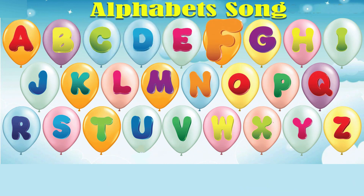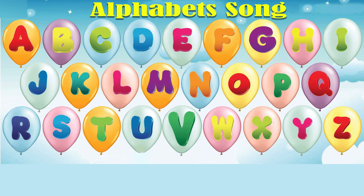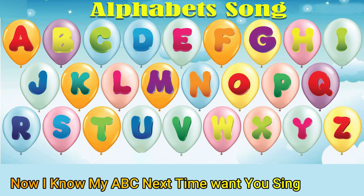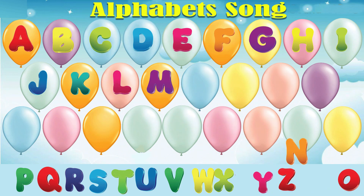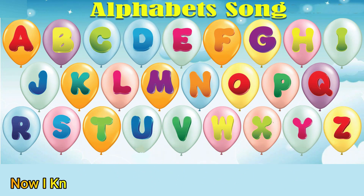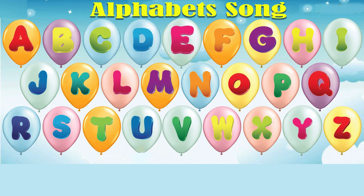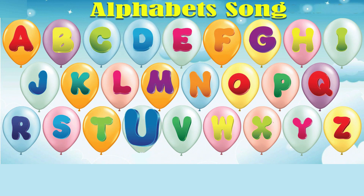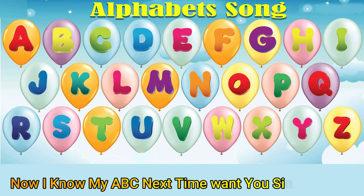A, B, C, D, E, F, G, H, I, J, K, L, M, N, O, P, Q, R, S, T, U, V, W, X, Y, and Z. Now I know my ABCs. Next time won't you sing with me? A, B, C, D, E, F, G, H, I, J, K, L, M, N, O, P, Q, R, S, T, U, V, W, X, Y, and Z. Now I know my ABCs. Next time won't you sing with me?